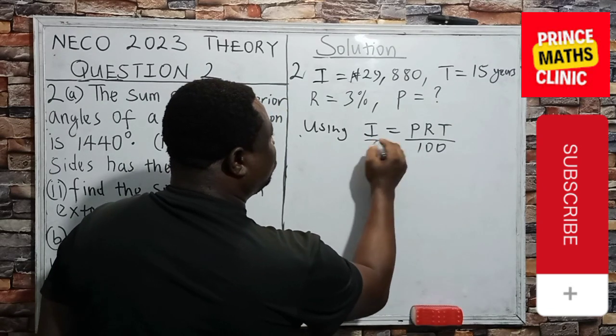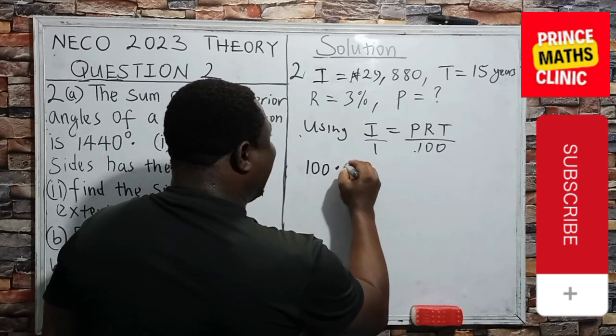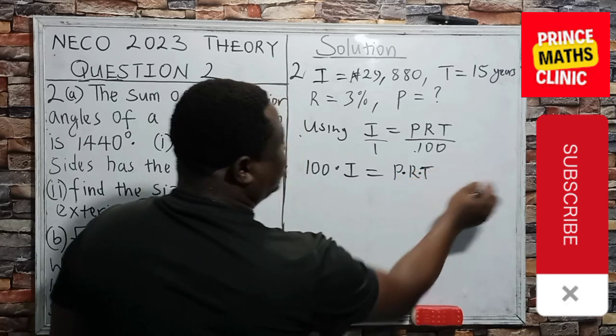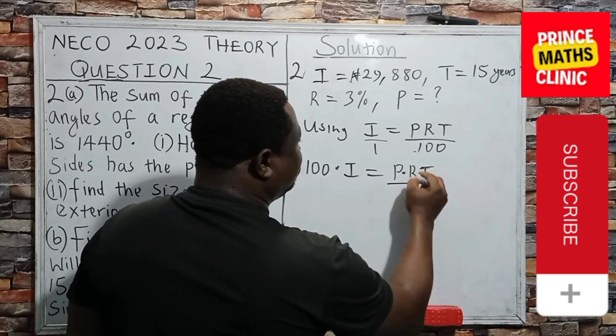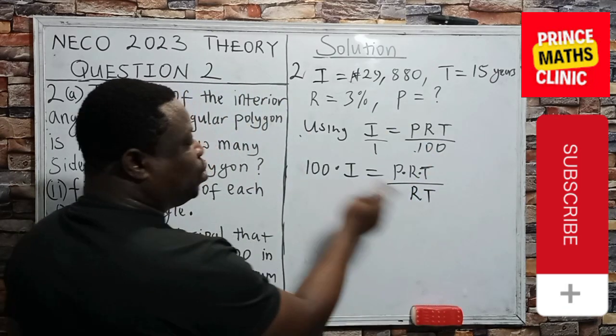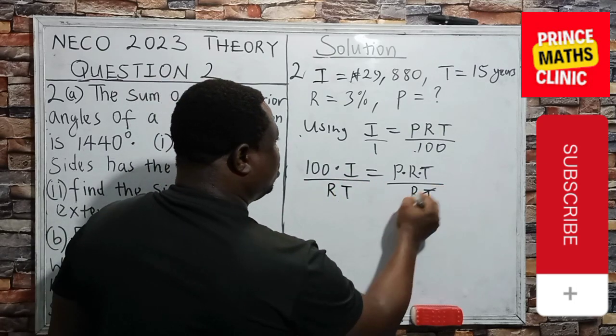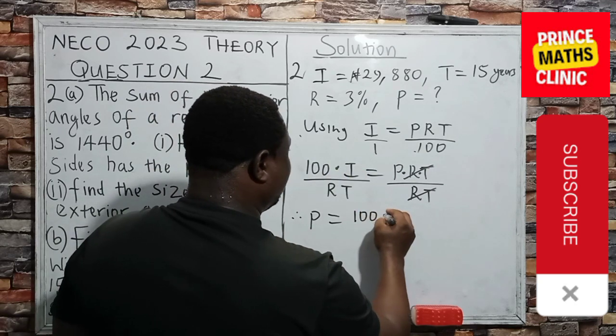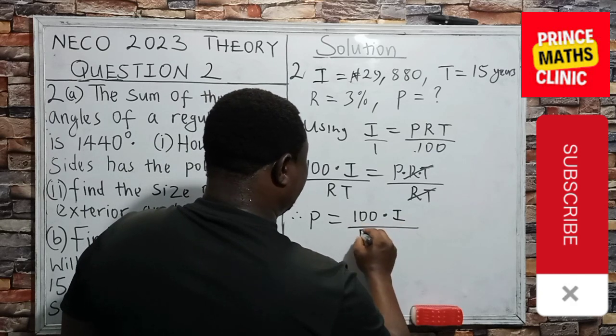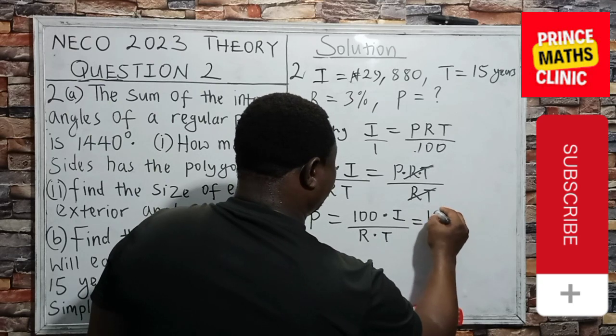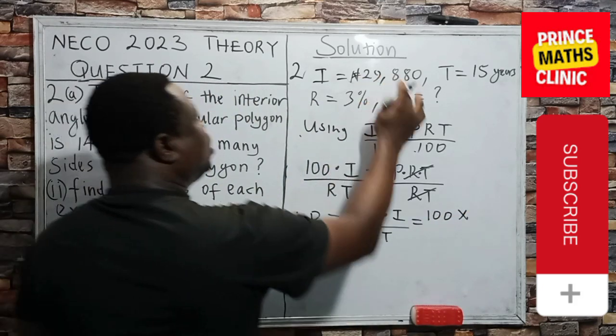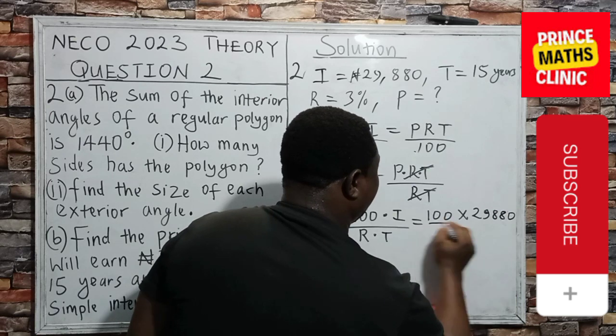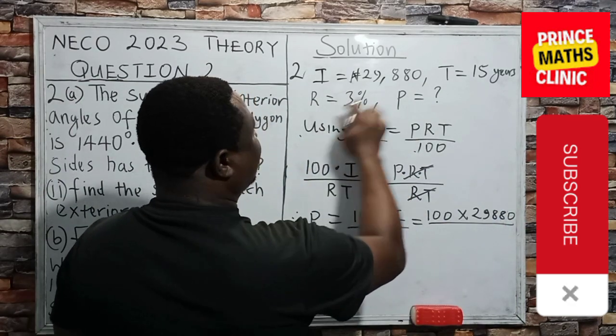Therefore, I can now find P by dividing here by R times T. And what is on the right, it must be to the left. R times T cancels R times T. Therefore, P will now be what? 100 times I. That's 100 times the interest over the rate times the time. Then, 100 times the interest, which is 29,880 naira, divided by R times T is what? 3 and time is 15.